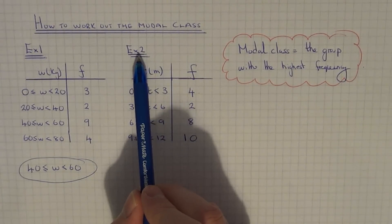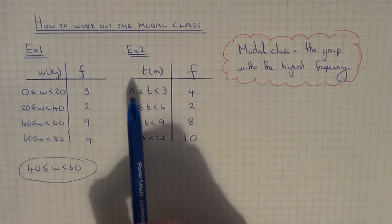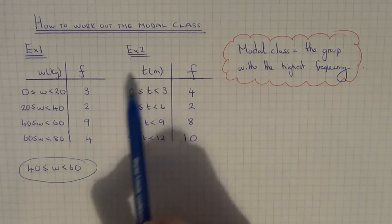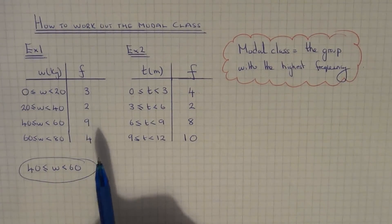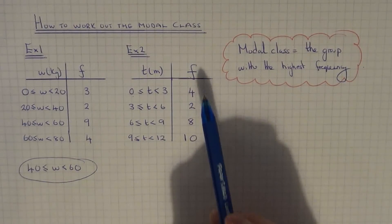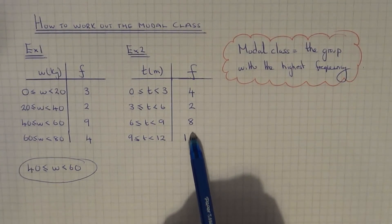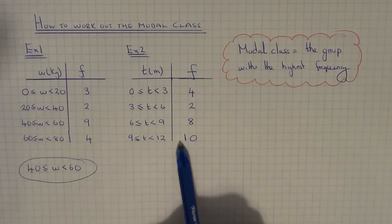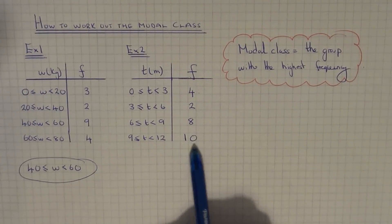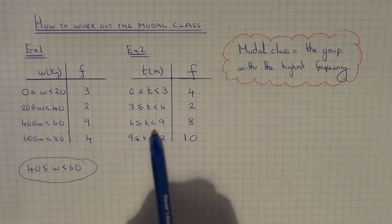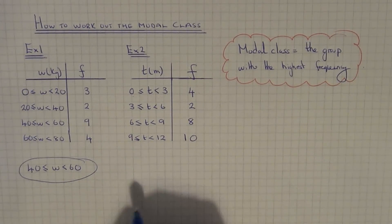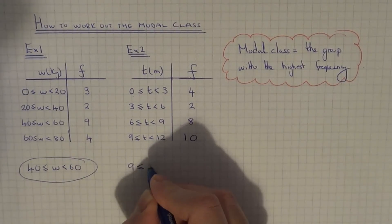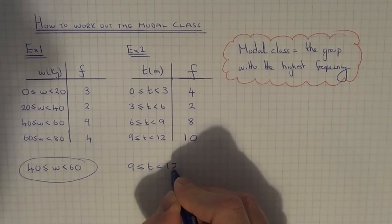So let's take a look at example two. This time we have the finishing times for a group of athletes who took part in the race in minutes. So again we just need to look down the frequency column for the highest frequency. This one has the highest frequency, so this group here would be the modal class. Copy that down onto your answer line.